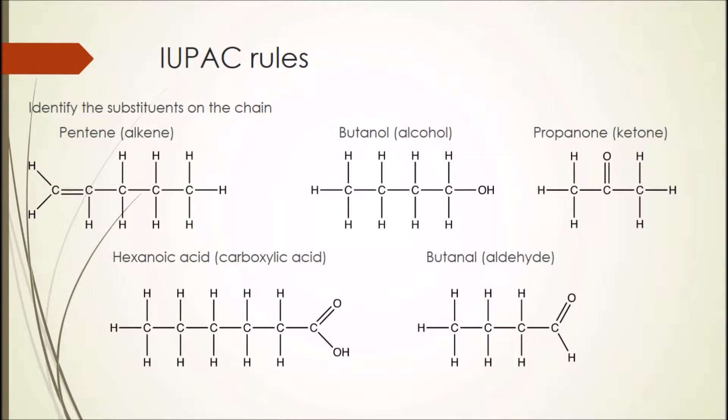When naming a compound with functional groups, again, start by identifying the longest carbon chain as well as identifying the type of functional group attached to the chain. When there's just one functional group attached to the chain, the functional group name forms the suffix of the compound name. Each functional group has a specific suffix. For example, alcohols and hydroxides are ol, and carboxylic acids are oic acid. Let's take butanol for example. We can see that there are four carbons in the longest chain which gives but, and the OH group attached to the end of the chain indicates that it is a hydroxy functional group, so the suffix will be ol. This gives us the name butanol.